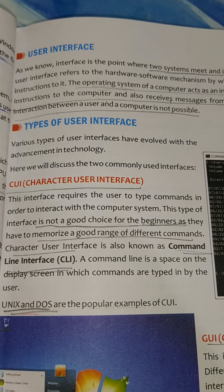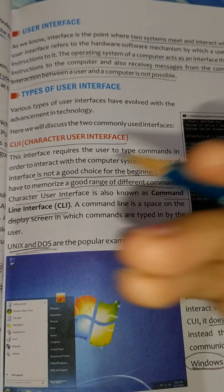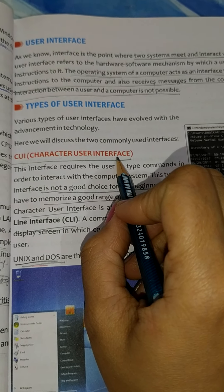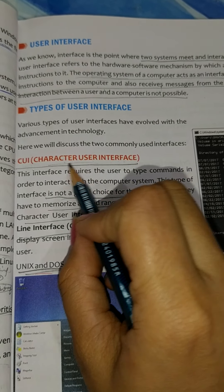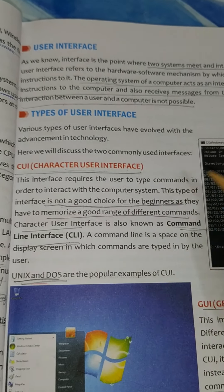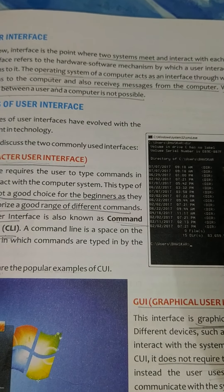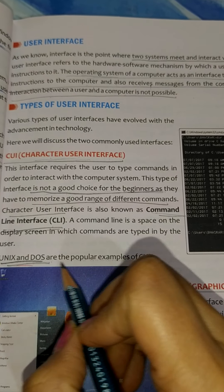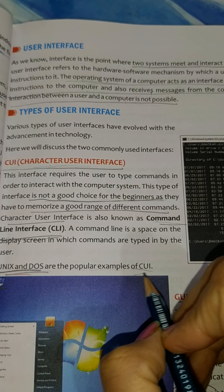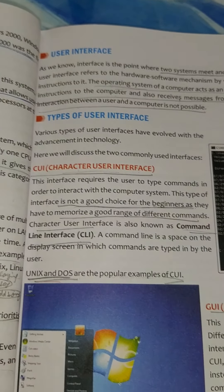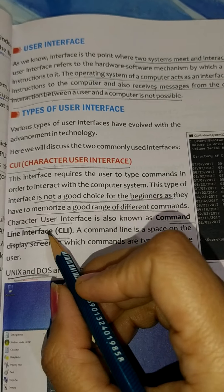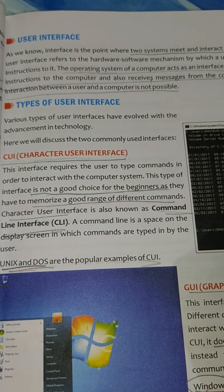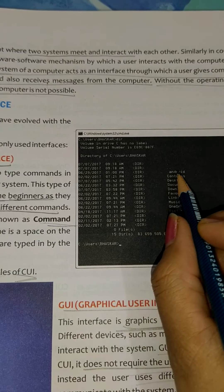There are two types of interfaces: one is CUI and the other is GUI. What is CUI? CUI is Character User Interface. It means that we write commands. If you have seen DOS or UNIX, those two are CUI — they are examples of CUI. Another name is Command Line Interface. Why? Because here we write commands on a command line.